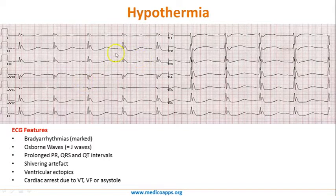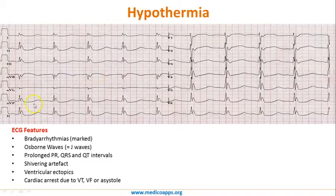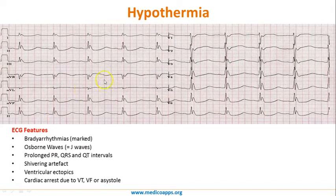The P wave is visible here, and the PR interval is increased. In severe hypothermia, you can also find shivering artifacts on the ECG. In this particular ECG you can see shivering artifacts as well. This is a typical ECG of hypothermia where you see the J waves — a slight positive deflection.